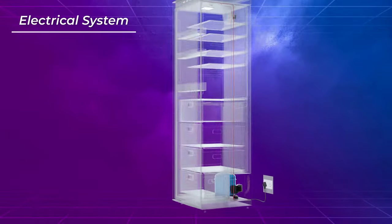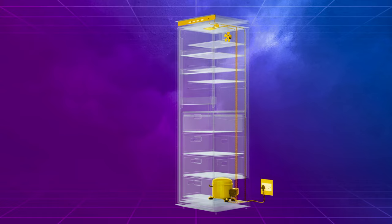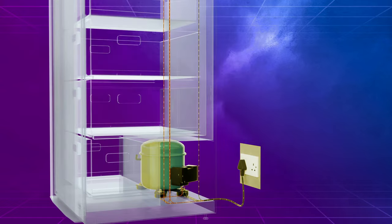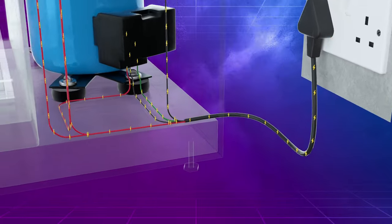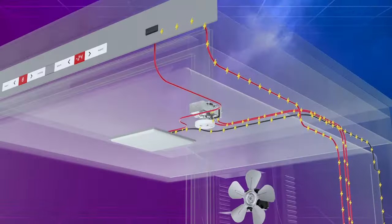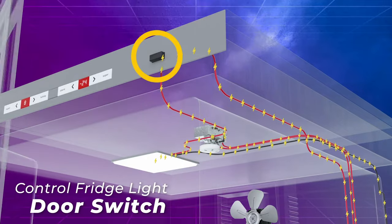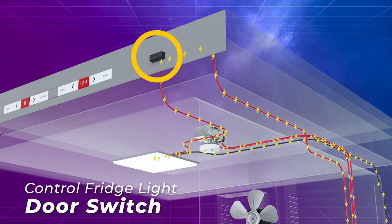Finally, let's take a look at the electrical system that powers the refrigerator. The power outlet supplies single-phase AC power to the fridge. The live wire connects to the door switch, turning the fridge light on when the door is open and off when it's closed.